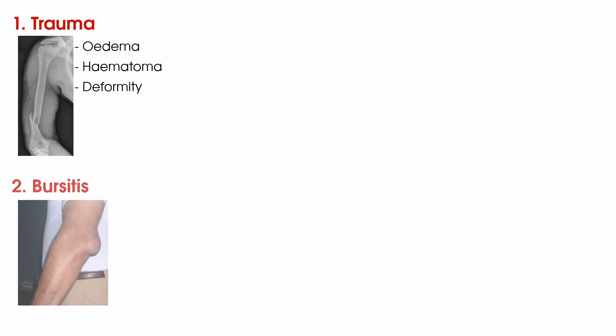Number two is bursitis, which put simply is inflammation of a bursa. Some bursae are more easily seen when they are inflamed. For instance, olecranon bursitis or student's elbow can be easily visualised as the bursa is right beneath the subcutaneous layer of the skin. Others are not so easily visualised due to their anatomy, such as subacromial bursitis where the bursa lies in a relatively deep position underneath the acromion. The amount of swelling seen therefore varies based on the anatomical site and the severity of inflammation.